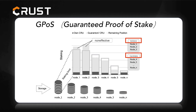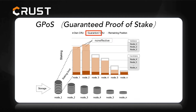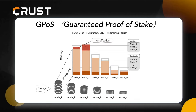The validator and candidate in this picture are actually storage nodes of the CRUST network. The network will calculate a staking limit based on the storage space. Nodes can choose to buy CRU by themselves, or they can choose to accept guarantees from other CRU holders. This involves a very important role in the CRUST network: the guarantor. The guarantor may be just a CRU holder who can choose to stake CRU for the node so as to share the node's income. The amount of staking exceeding the staking limit is invalid.